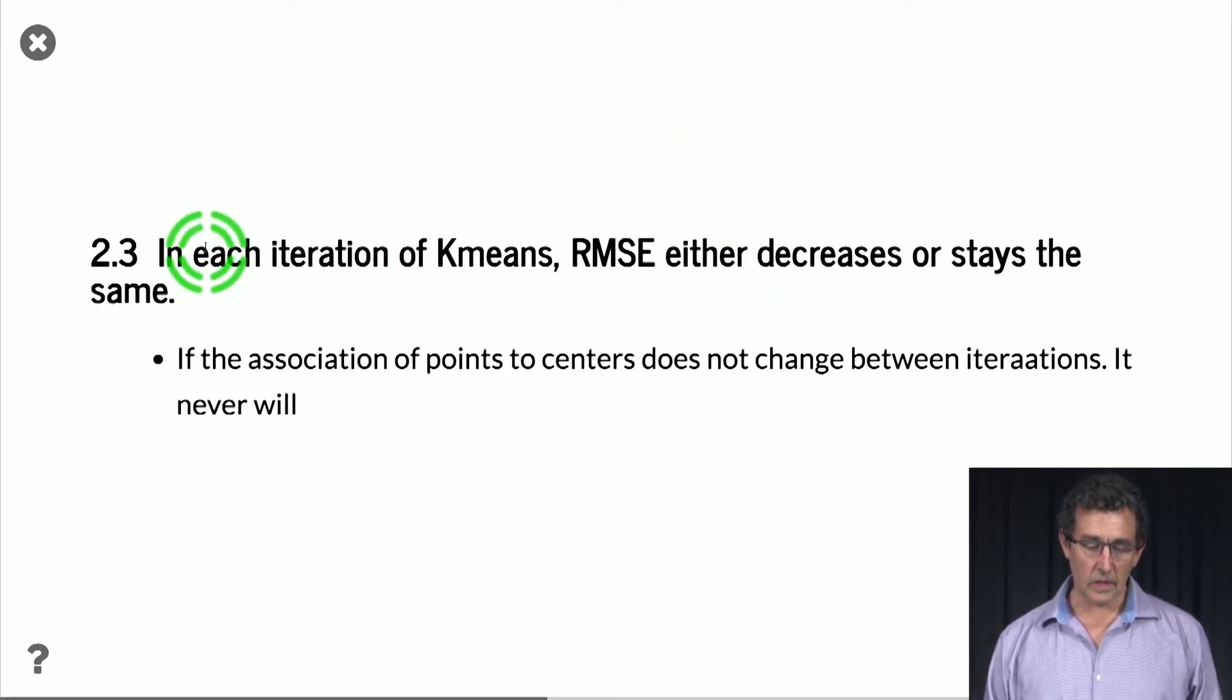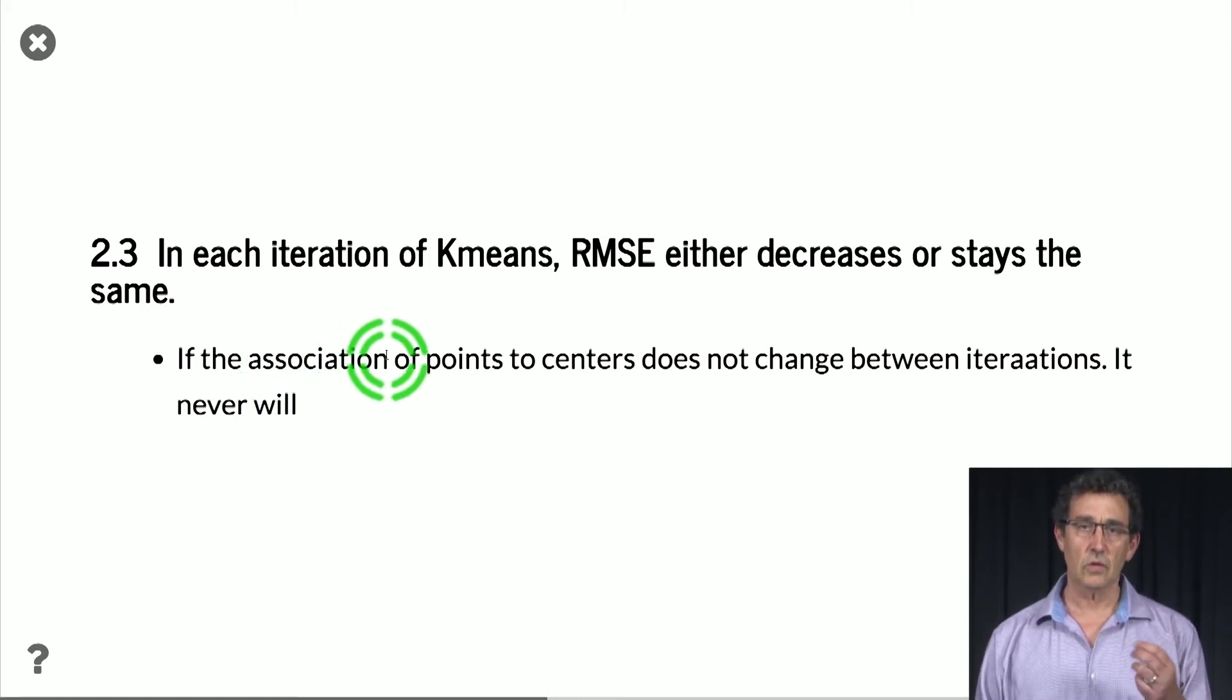So what we can say is that in each iteration of k-means, RMSE either decreases or stays the same. So a special case of that is if we think about the association of points to centers, at every iteration, we are associating each example with its closest representative. If this association doesn't change between two iterations, then it's never going to change again. It's going to stay the same forever.